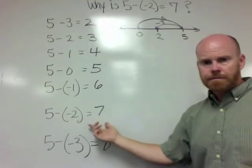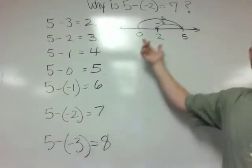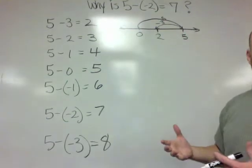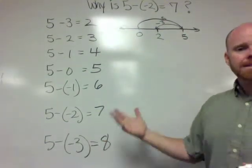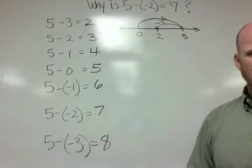Now let's look down here. So this is the big one that we want to find. Why is 5 minus negative 2, 7? Well, first off, because the pattern says so. Let's see if we can figure out another way to think about it.